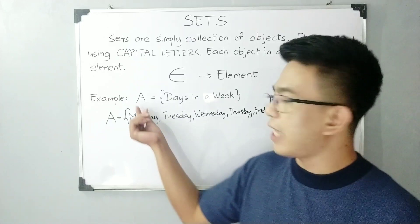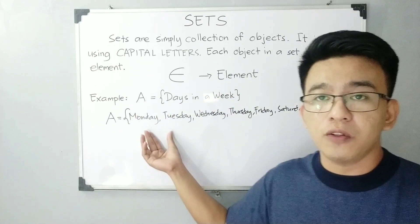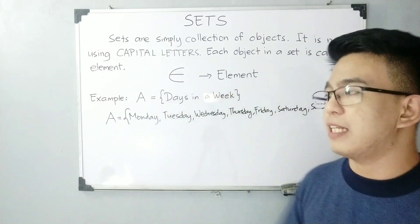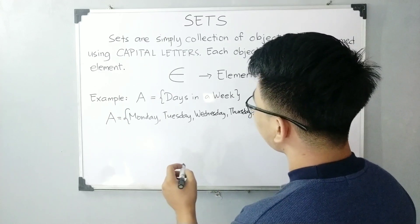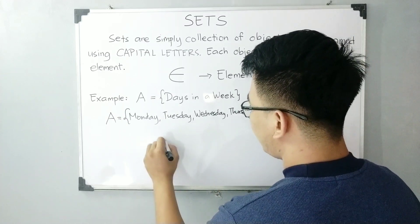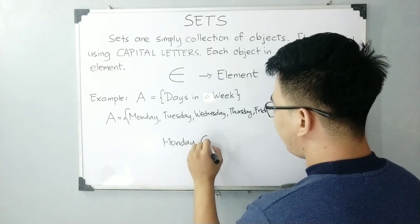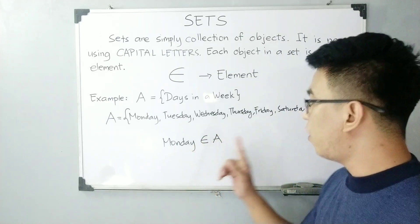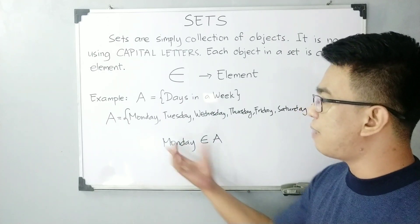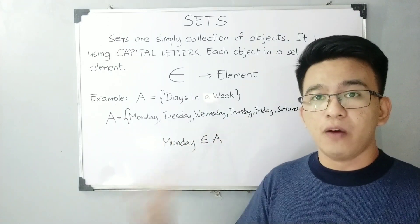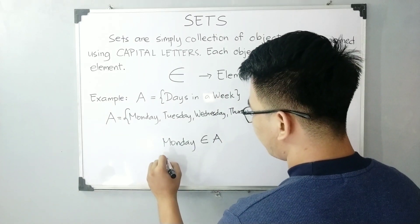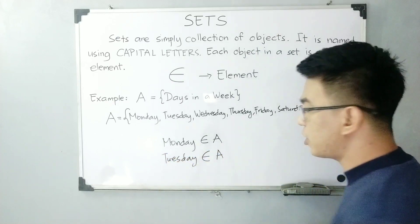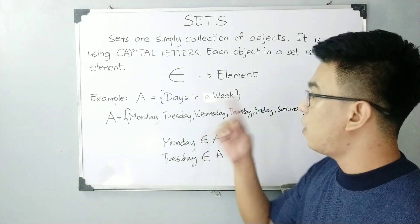So kung isipin mo, sabi nga sa set A natin, days in a week, eto yung nakapaloob sa set A mo. Para mas mag-gets mo yung elements natin, we can say that Monday is an element of A. Monday is an element of set A — tama naman kasi yung Monday natin is nakapaloob dito sa days in a week. Similarly, Tuesday is an element of set A.